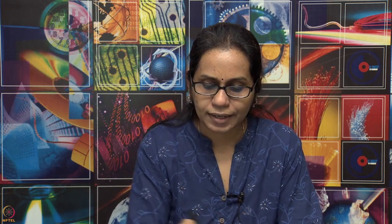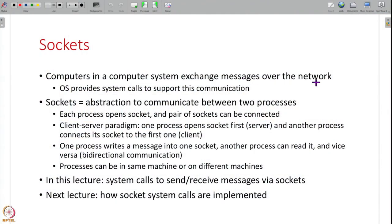All modern operating systems provide this abstraction of communication between two machines via a concept known as sockets. Any computer system needs machines to exchange messages with each other, and a socket is an abstraction using which you can actually exchange these messages. A socket is a way to communicate between two processes. These processes can be in the same machine or different machines — the idea of sockets remains the same.